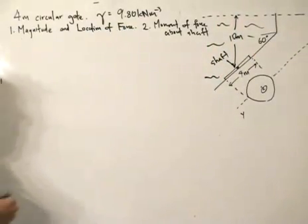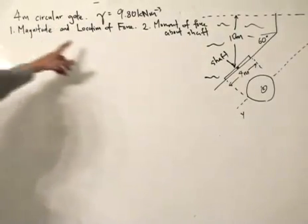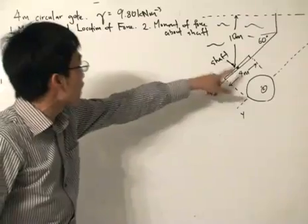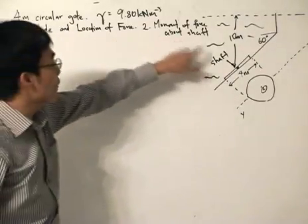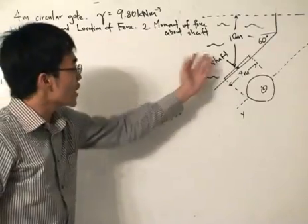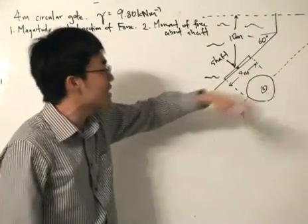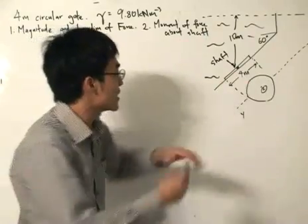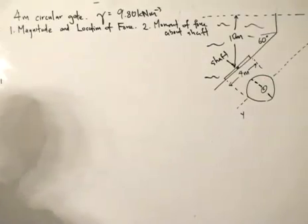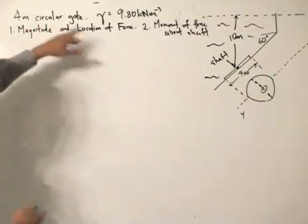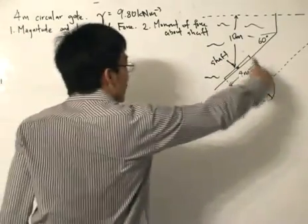Basically, it's about finding the magnitude and the location of the hydrostatic force acting on the shaft. Once we are done with that, we want to find the moment of the force about the shaft. If you turn it this way, the shaft is essentially just a circular disc where there's a rod that holds it in place. It's a circular gate, four meters in diameter.